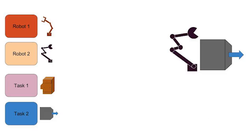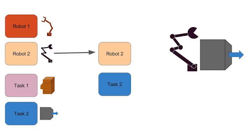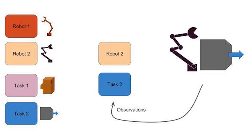Given an unseen robot-task combination, we assemble the relevant modules to form a new policy. Although each module is trained in other combinations, neither module has seen this particular combination before. We evaluate the zero-shot performance of this policy.